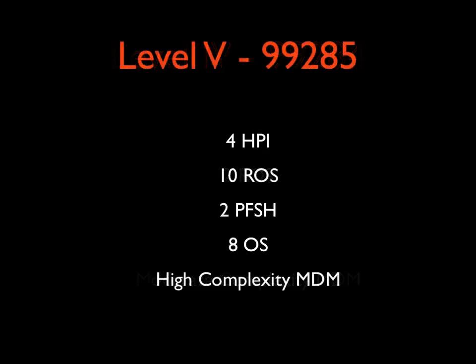Level 5 (99285) requires 4 HPI, 10 review of systems, 2 past family social history elements, 8 exam findings, and high-complexity medical decision making.